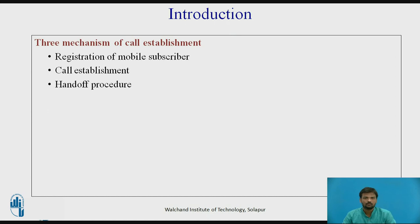There are three mechanisms of call establishment which are embedded in all voice-oriented cellular communication networks that allow a mobile subscriber to establish and maintain a connection with the network. These mechanisms are: registration of the mobile subscriber, call establishment, and hand-off procedure.